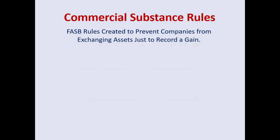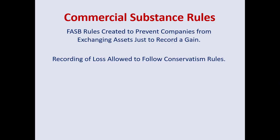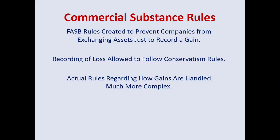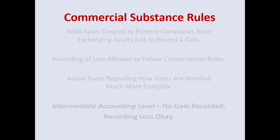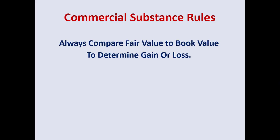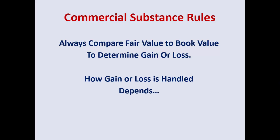The FASB rules were created to prevent companies from exchanging assets just to record a gain. Recording of a loss is allowed to follow the rules of conservatism, but the actual rules regarding how gains are handled, there's a little more to it. If you are at the intermediate accounting level, this is for information only — don't record any gain, but recording a loss is okay. Regardless of level, you always want to compare fair value to book value to determine if you have a gain or a loss, and how it will be handled depends.